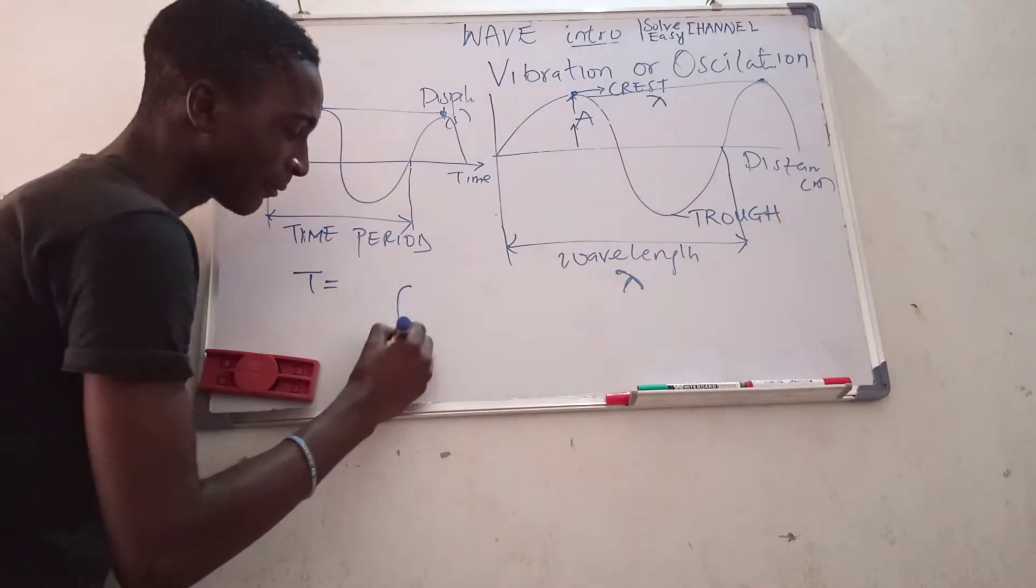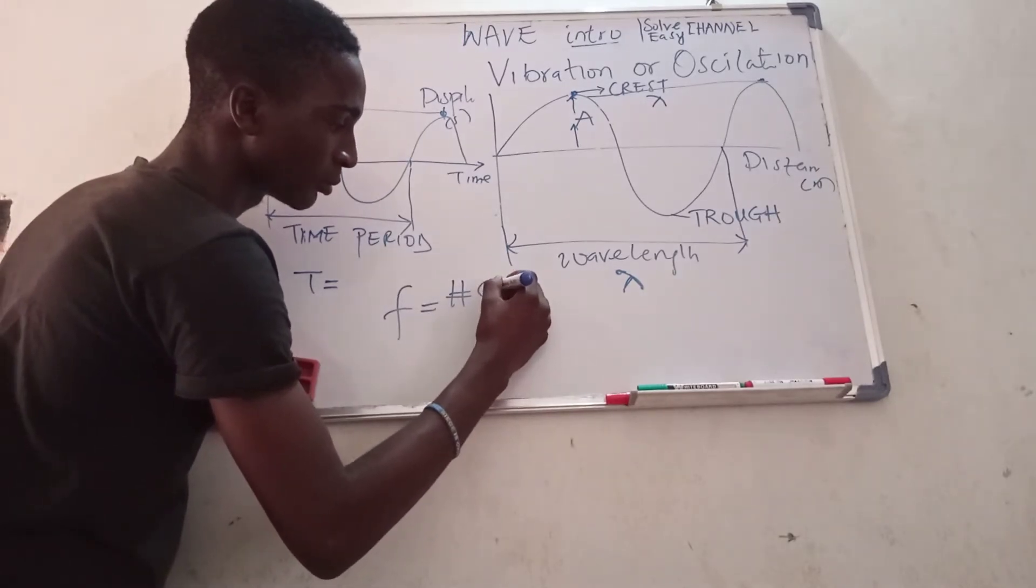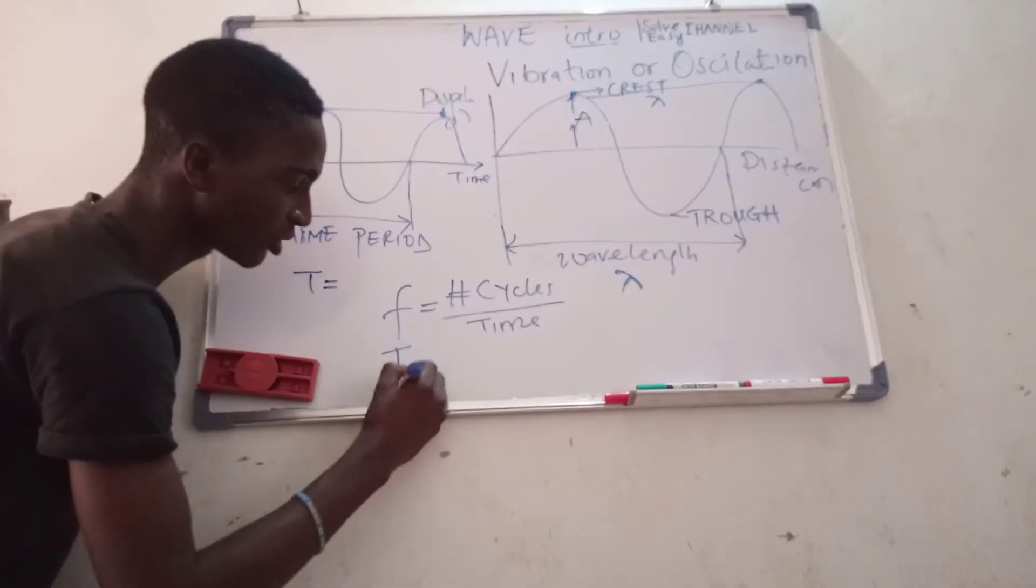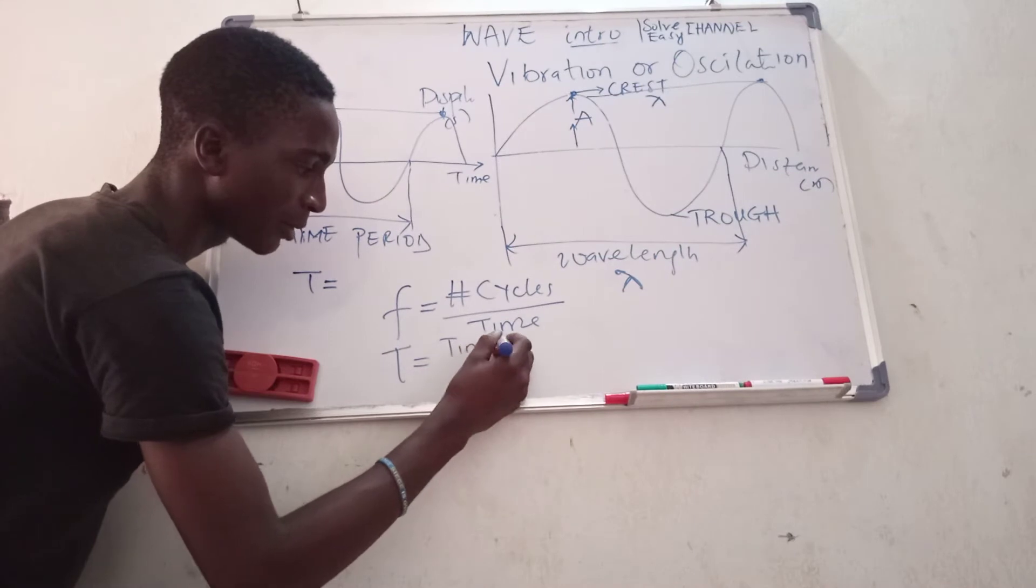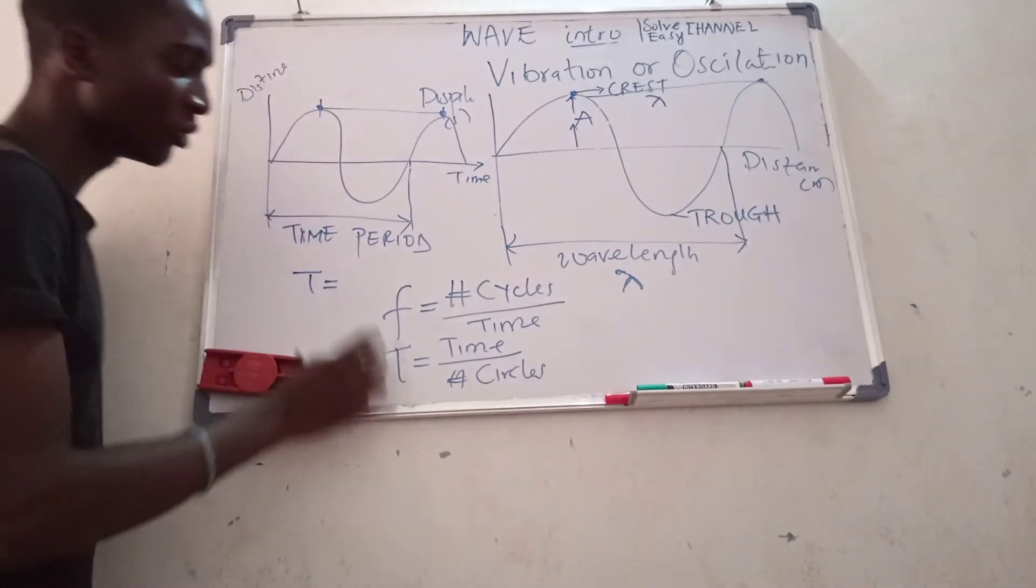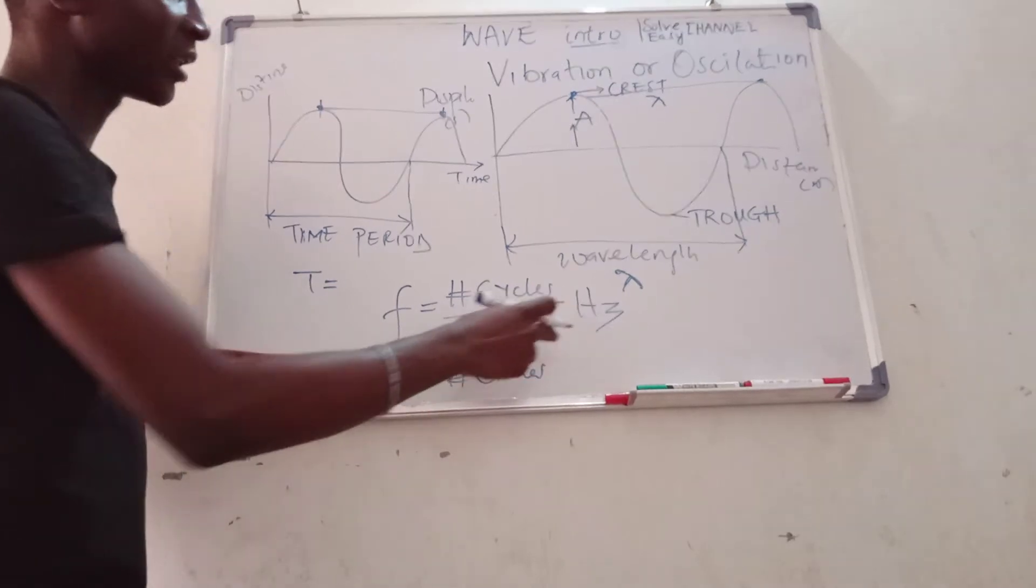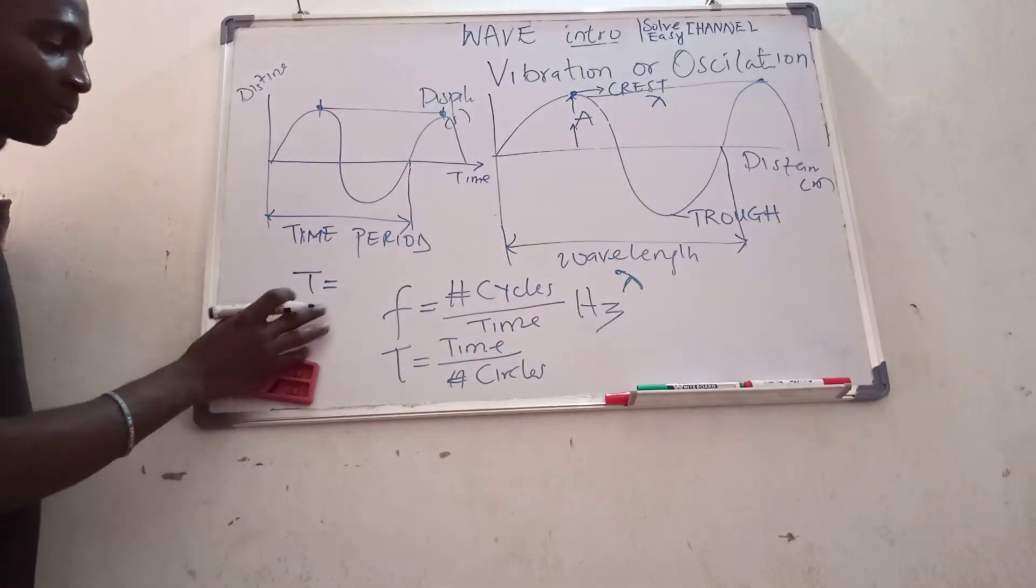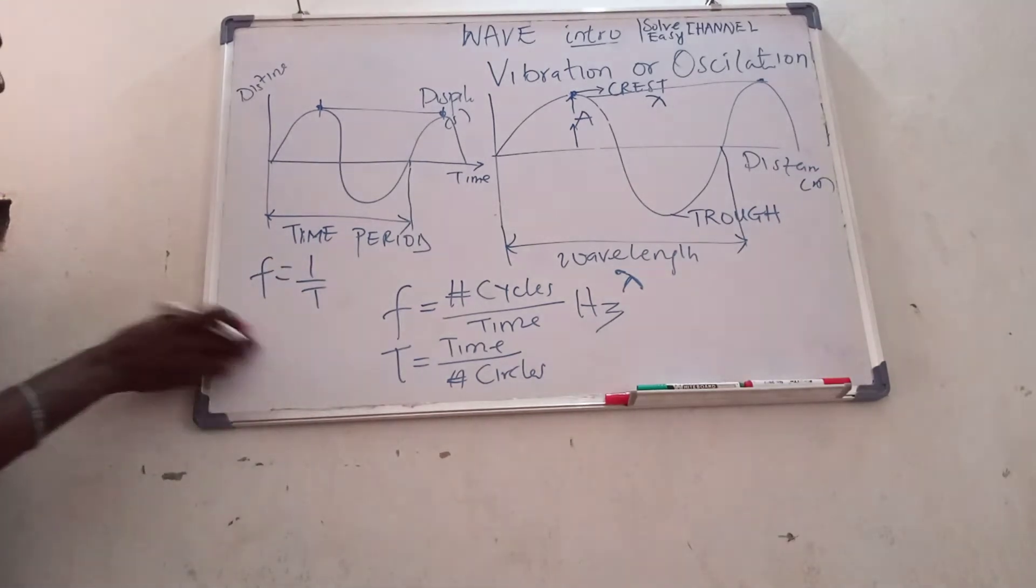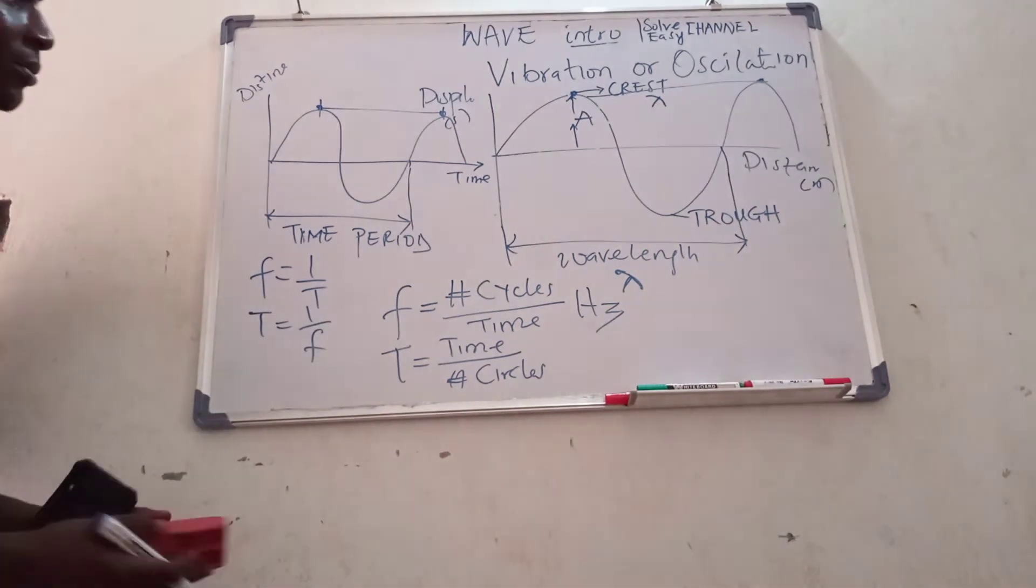And from there you can get our frequency. Frequency is the number of cycles per unit time, and period T is equal to time over number of cycles. The unit of frequency is denoted as Hz. So you see, my frequency is inversely proportional to my period T, and my period T is inversely proportional to my frequency.